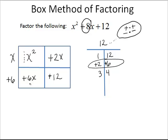Now look at the first column: x squared plus 6x. The only thing that can be factored out here is an x term — the x with the smaller power — so I will write an x here. Looking at the second column, we've got plus 2x and plus 12. We can't factor out an x term, but we can factor out the GCF, which is 2. So I'm going to write plus 2, since this box contained a positive number.